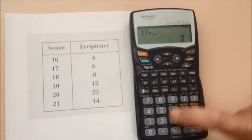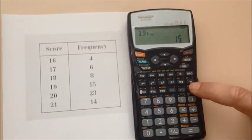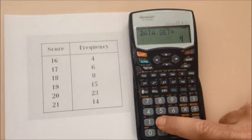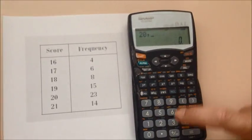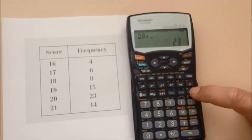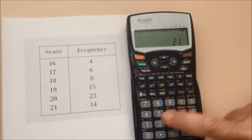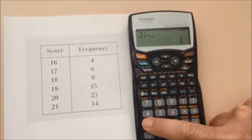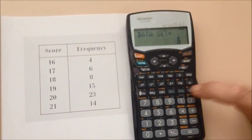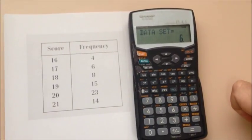19 occurs 15 times, add it in. 20 occurs 23 times, add it in. 21 occurs 14 times, add it in. So I've put six groups of data in.